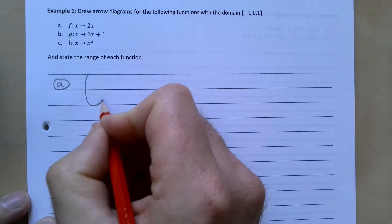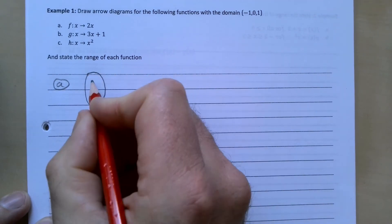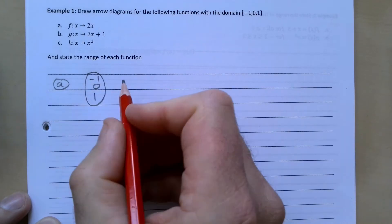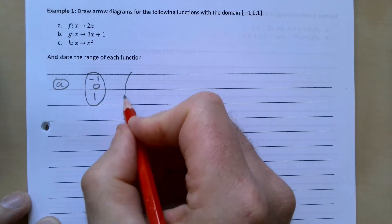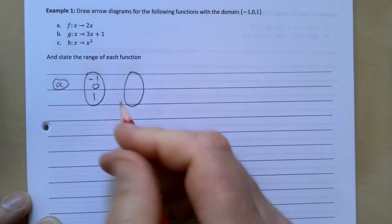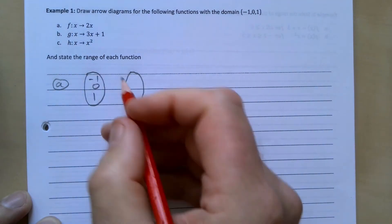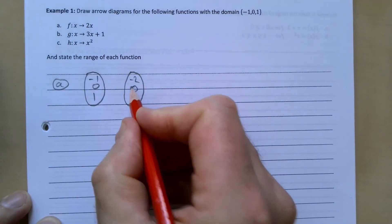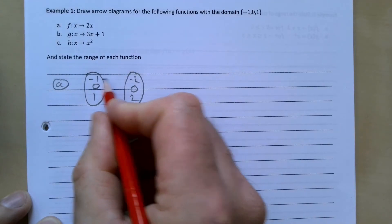So our arrow diagrams look like this. We're putting in -1, 0, and 1. For f(x) = 2x, we're doubling each value. So -1 goes to -2, 0 goes to 0, and 1 goes to 2.